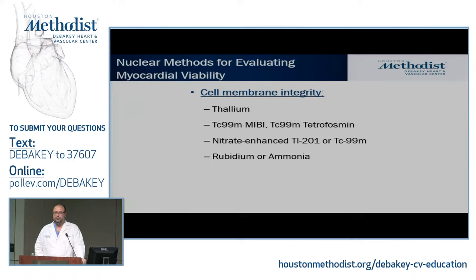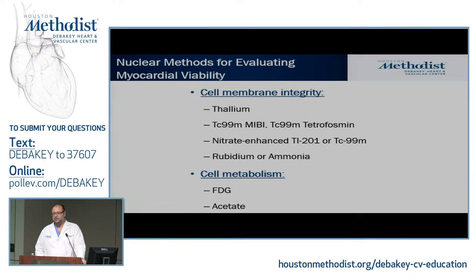How do we do it with nuclear? We look at two things. The first is cell membrane integrity — if the cell membrane has good integrity, the cells are most likely viable, and we measure this by perfusion agents: thallium, technetium, and also rubidium or ammonium. We also look at cell metabolism, which is probably more of a latent effect to be lost, and this is where we look for FDG. There is some research with acetate for that.